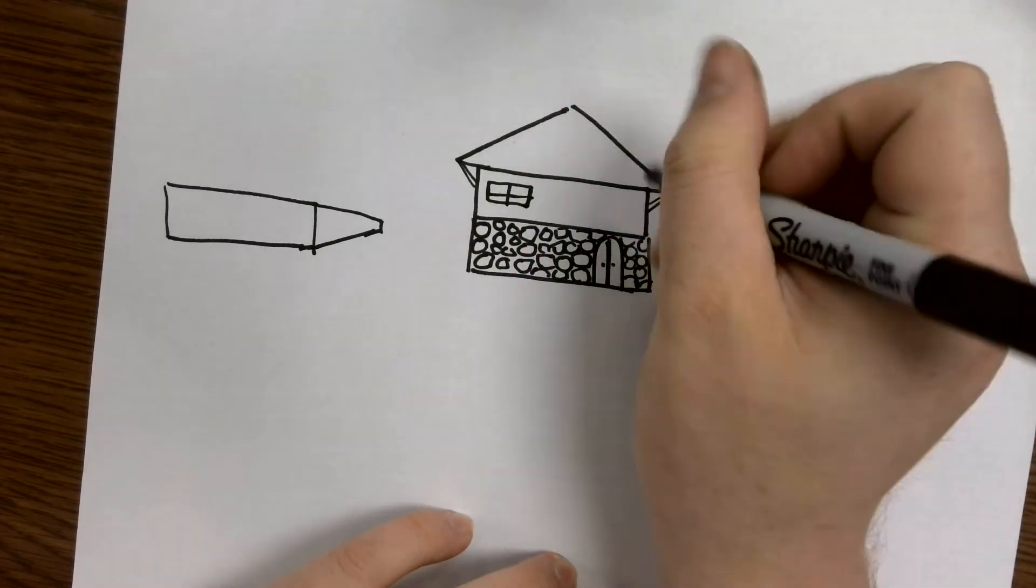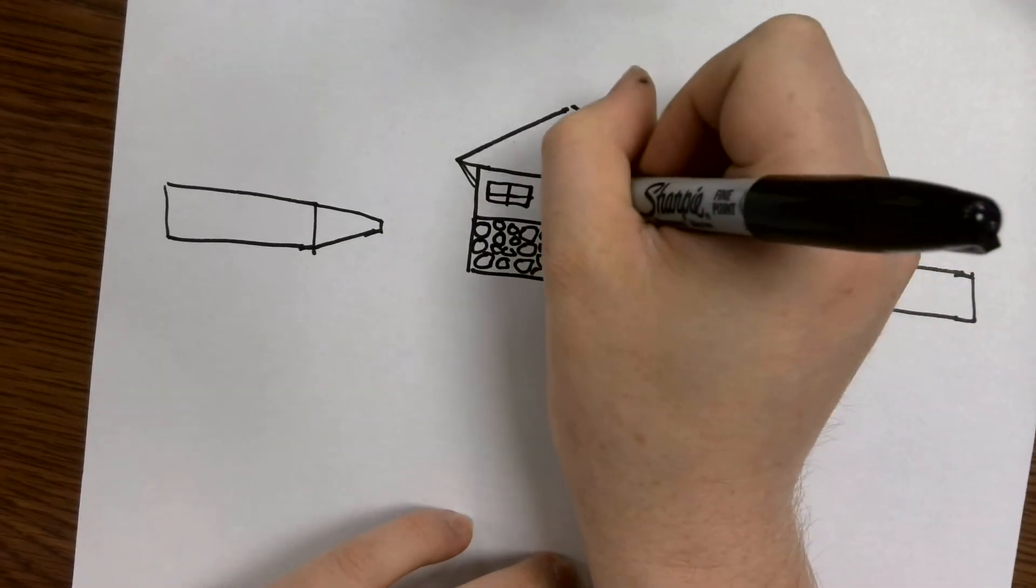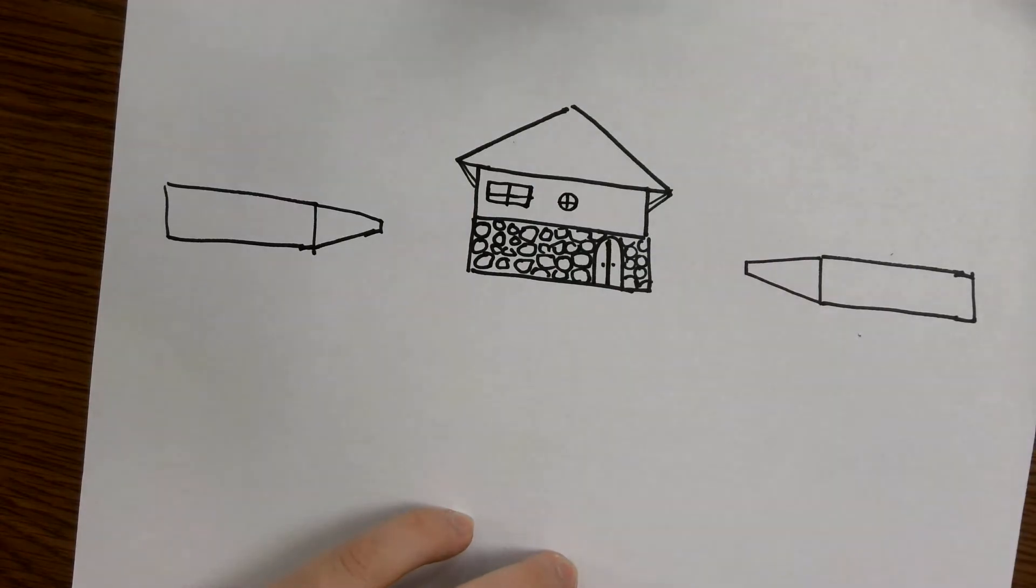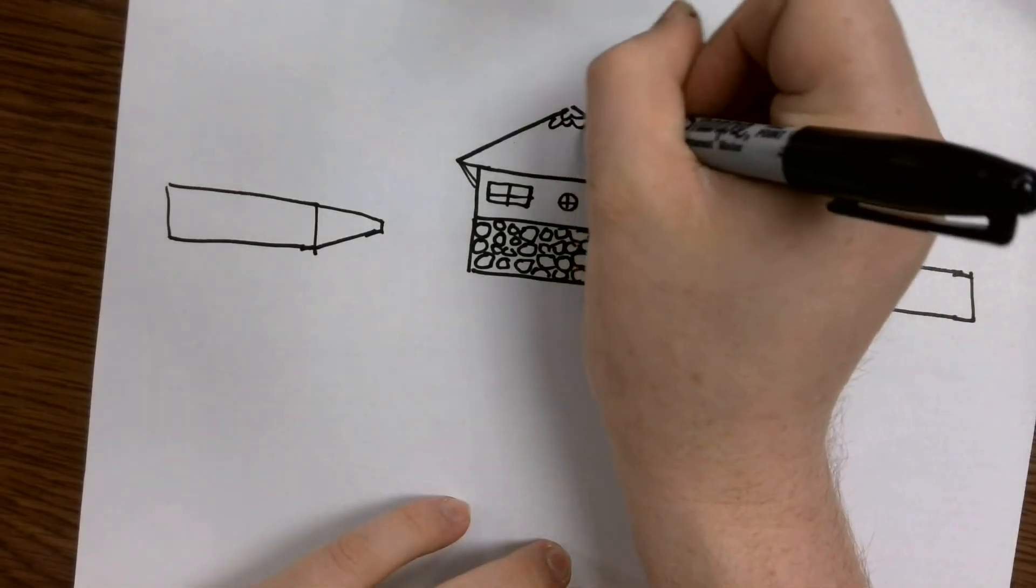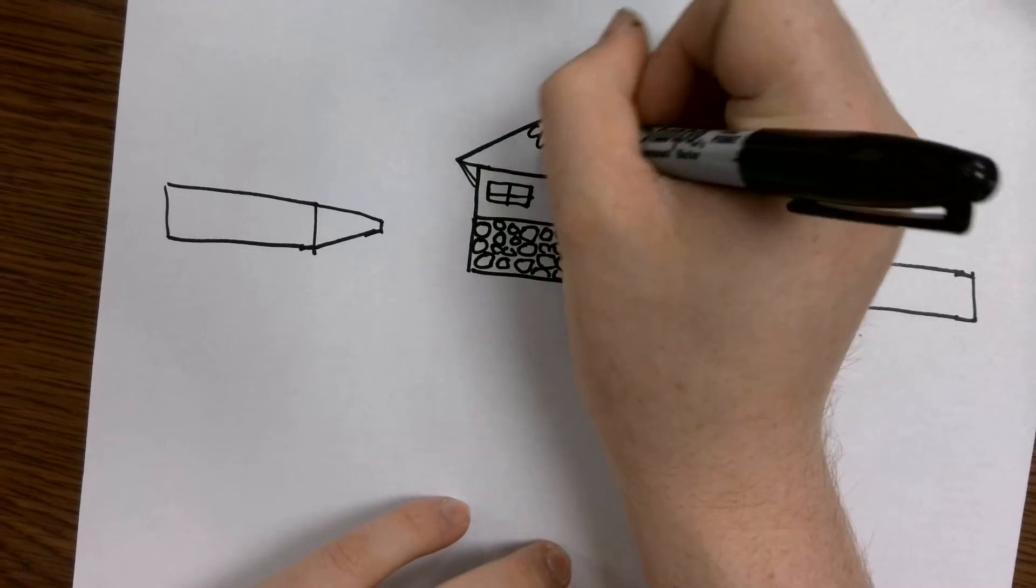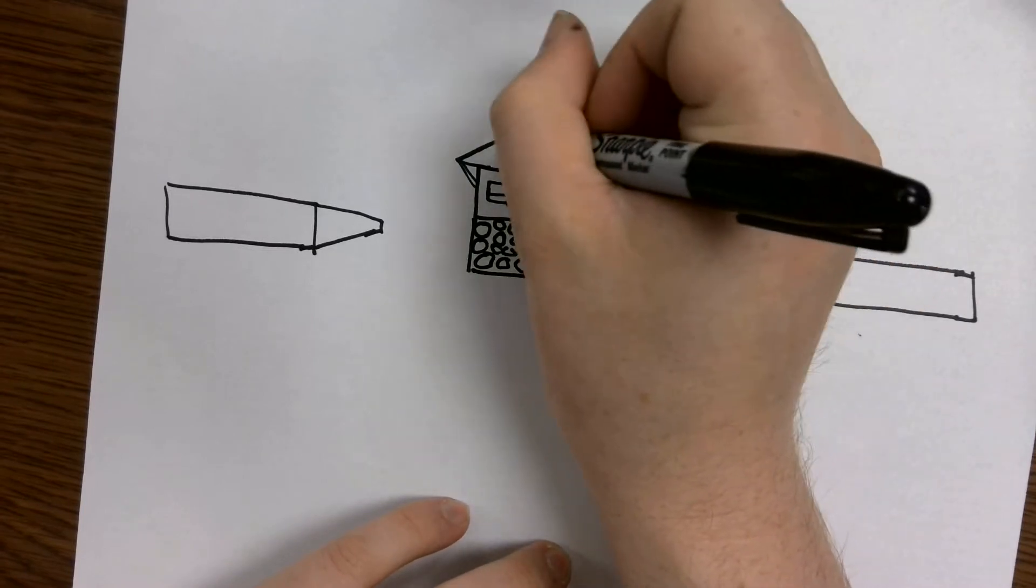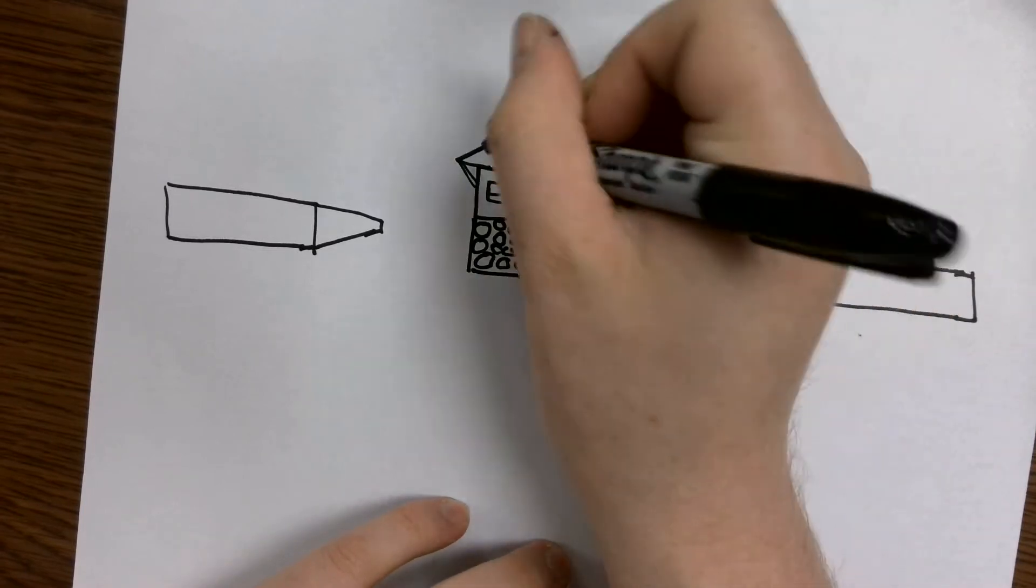Maybe add a little window up here. And windows can be all sorts of sizes. They could be circles. They could be triangles. They could be anything you want. And up here I'm just going to add some little texture, sort of like my fish scale texture, but for my roof.